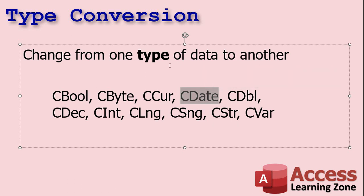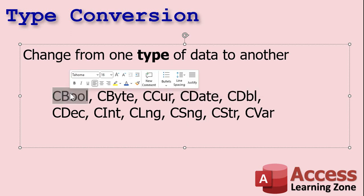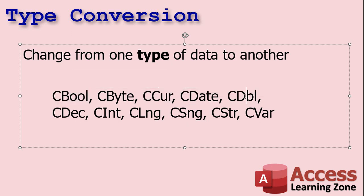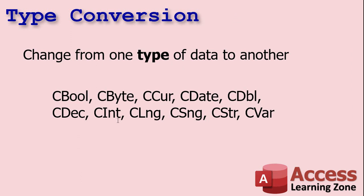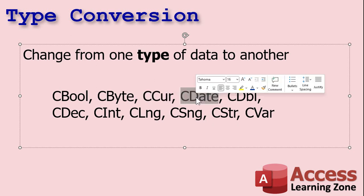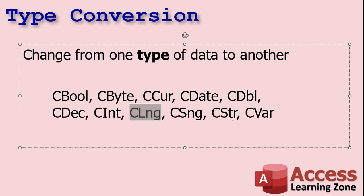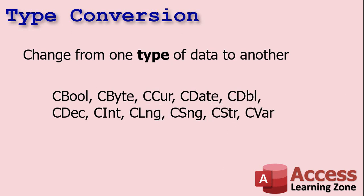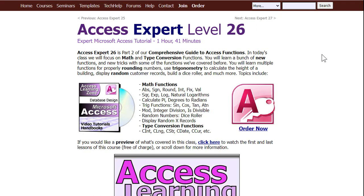That's pretty much how the conversion functions work. In this example I used CDate. You can use the rest as needed: CCur for currency, CBool for yes/no boolean values, CDbl for double. I almost never use CVar, CSng, CDecimal, or CByte, but the ones you'll use most are: CCur (convert to currency), CDate (convert to date), CLng (convert to long integer) — which I use a lot — and CStr (convert a number to a text string).